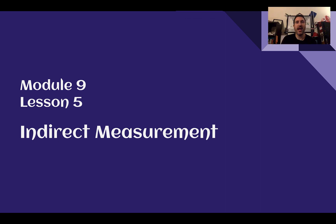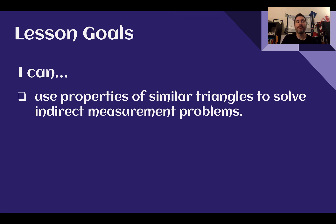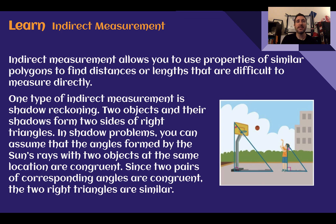Hey there, Mr. Weaver here and this is 8th grade module 9, lesson 5, Indirect Measurement. After this lesson you need to be able to use properties of similar triangles to solve indirect measurement problems. Let's learn.